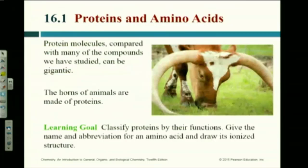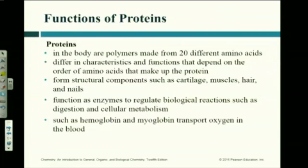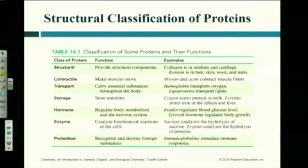Where do you find protein? In muscles, right? That's not the only place. These horns on these animals — these cows — are made of protein. Proteins are found in your fingernails, cartilage, muscles, and hair. Proteins make up enzymes; enzymes are proteins. Proteins are polymers of amino acids, with at least 20 different amino acids. They function as enzymes regulating basically every reaction in your body. They also make up molecules like hemoglobin and myoglobin, which transport oxygen. Proteins are structural, contractile — meaning they make movement — and important for transport, nutrient storage, hormones, and protection.